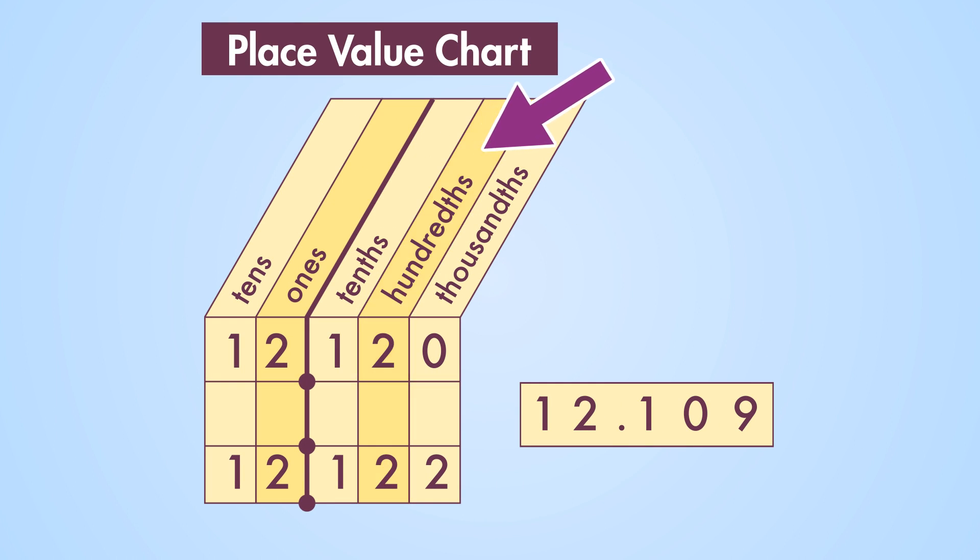Keep moving to the right to compare the values of the remaining numbers. The next place where we see a difference is the thousandths column. The zero in the thousandths place is the lowest value.